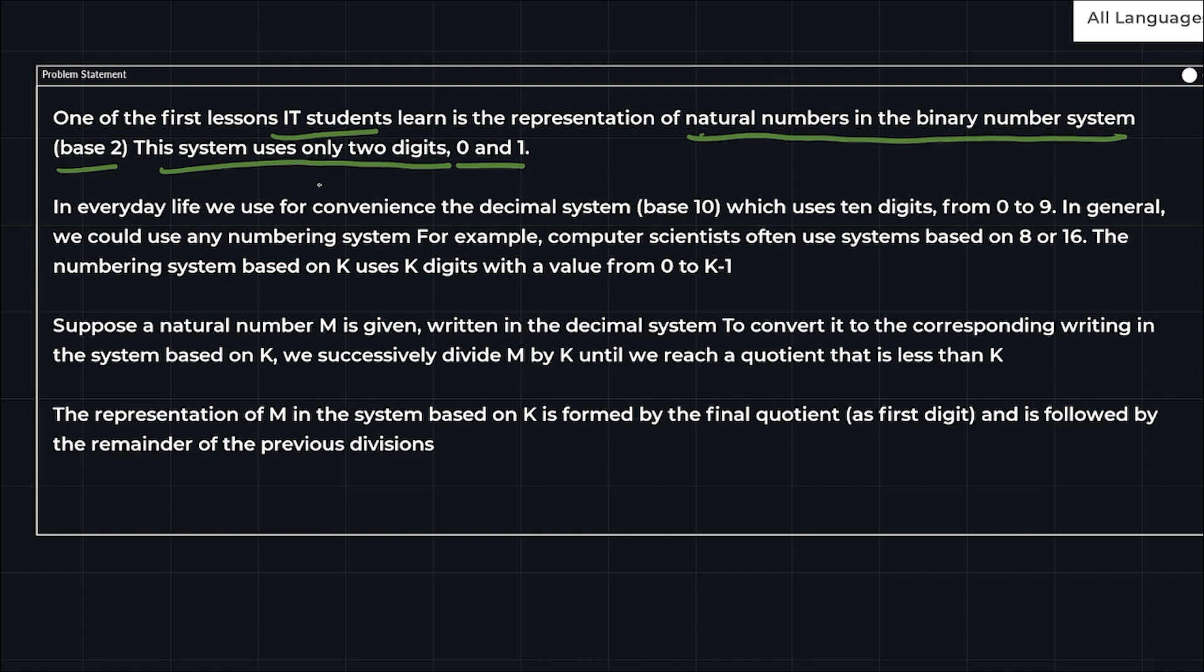In everyday life we use for convenience the decimal system base 10 which uses ten digits from 0 to 9. In general we could use any numbering system. For example, computer scientists often use systems based on 8 (octal) or hexadecimal. The numbering system based on K uses K digits with values from 0 to K minus 1. To convert a natural number M written in decimal to the system based on K, we successively divide M by K until we reach a quotient that is less than K. The representation of M in the system based on K is formed by the final quotient as first digit followed by the remainder of the previous divisions.